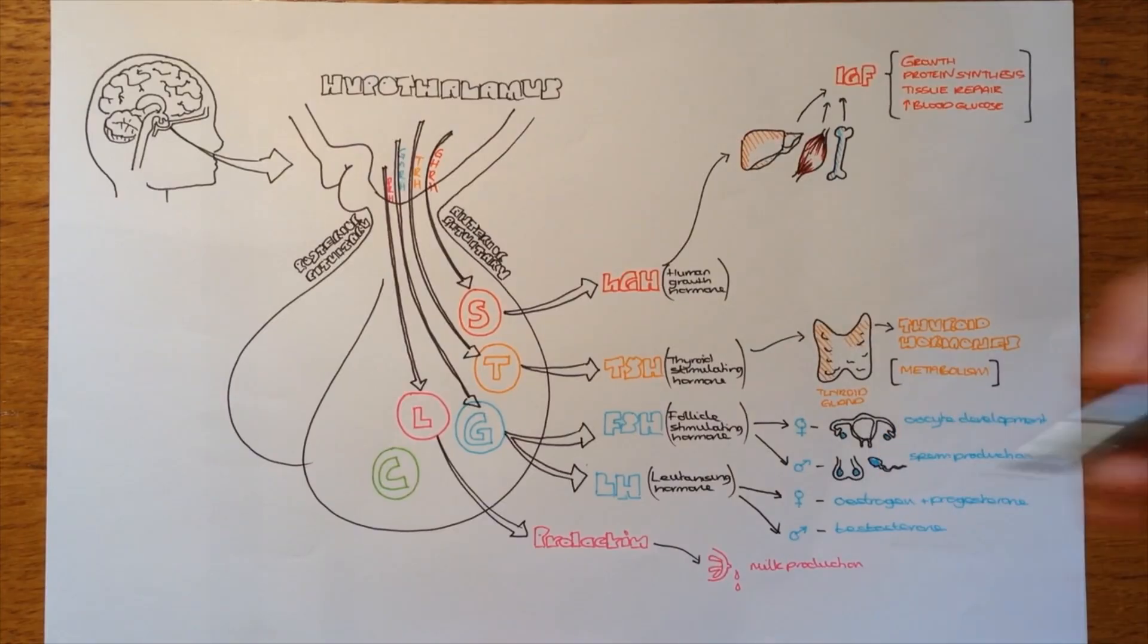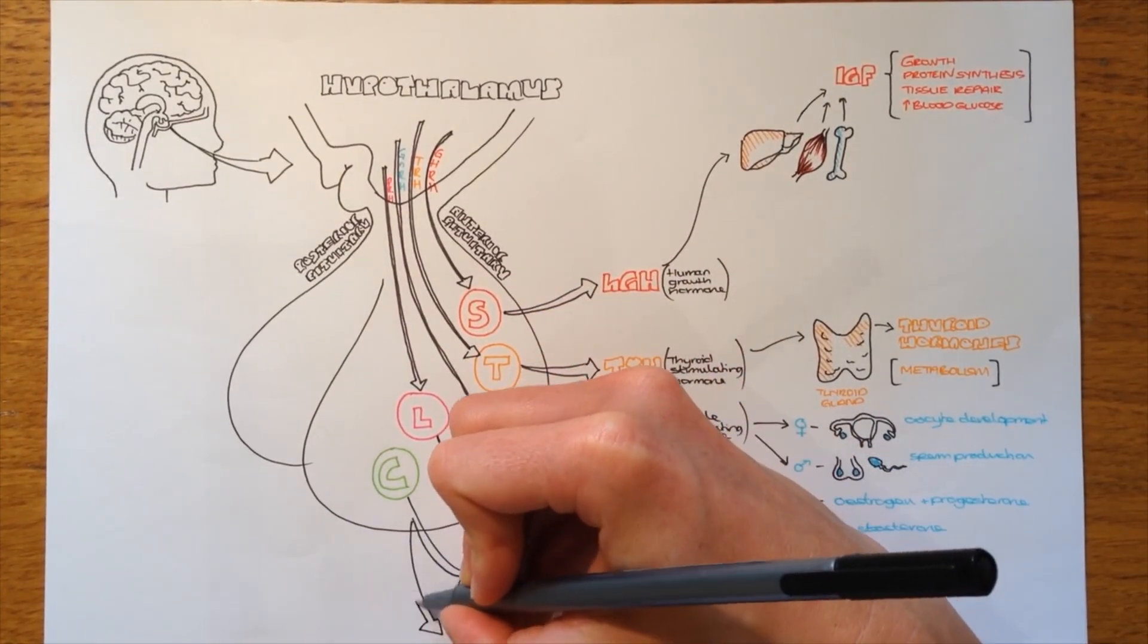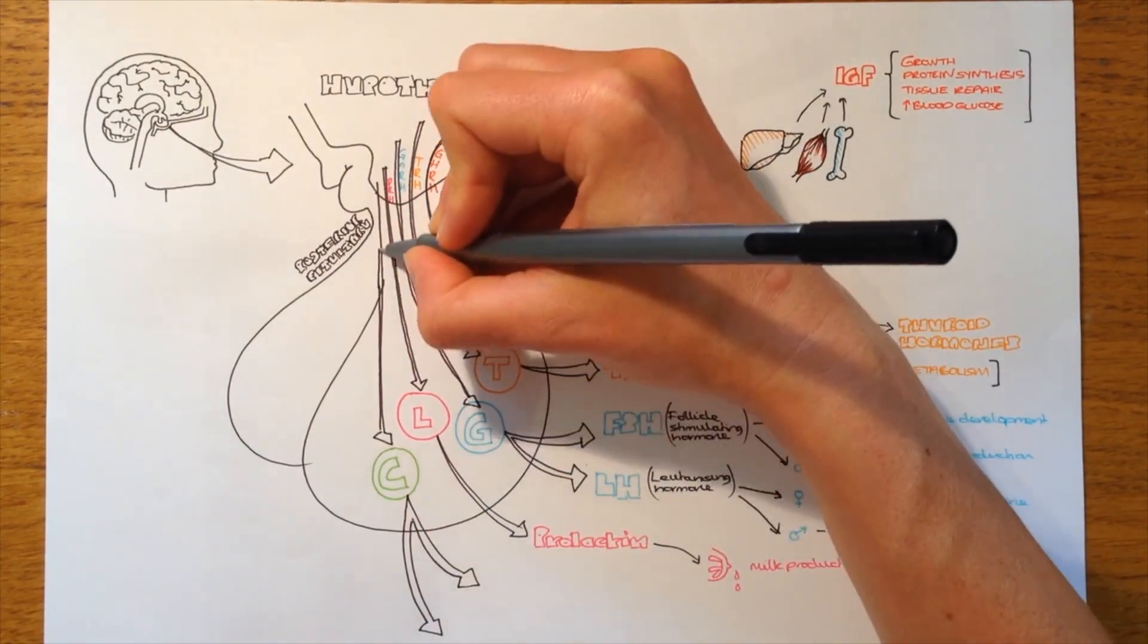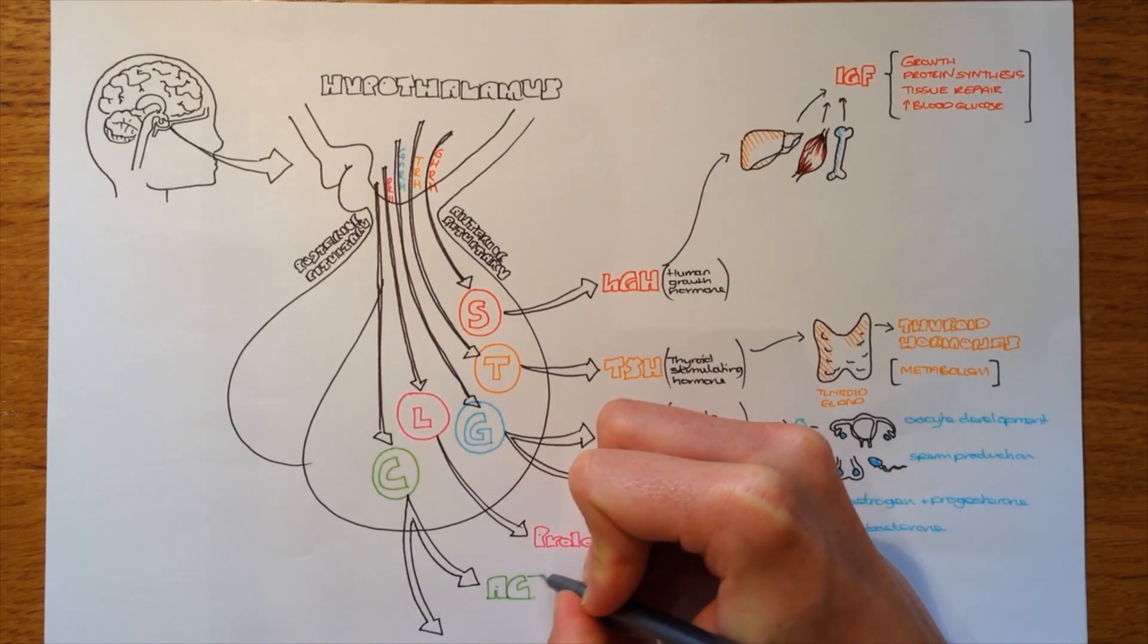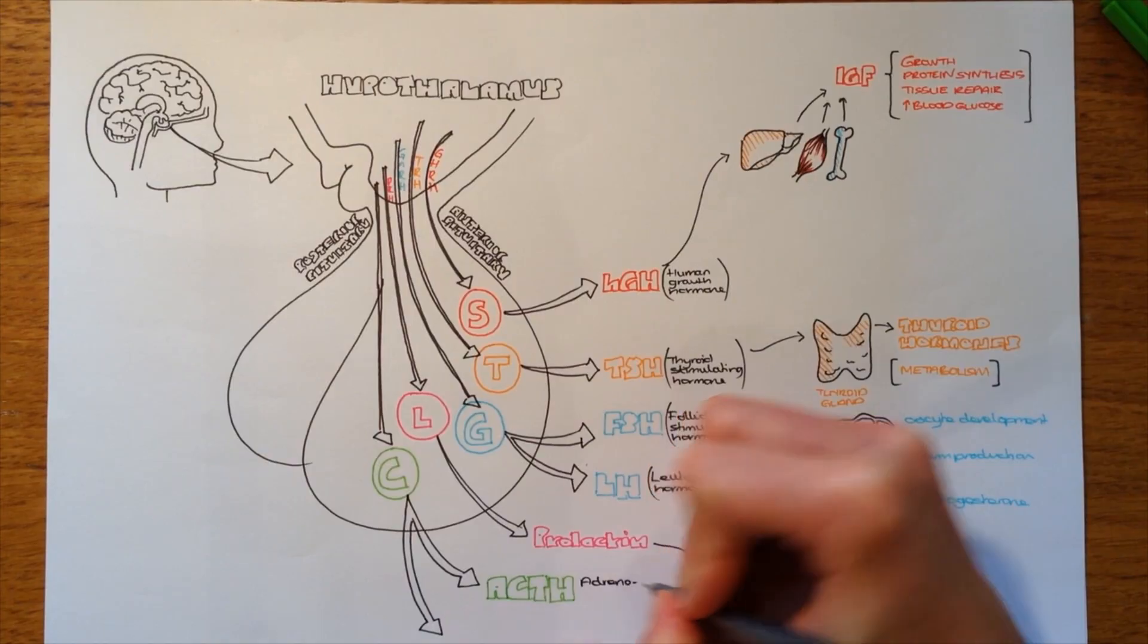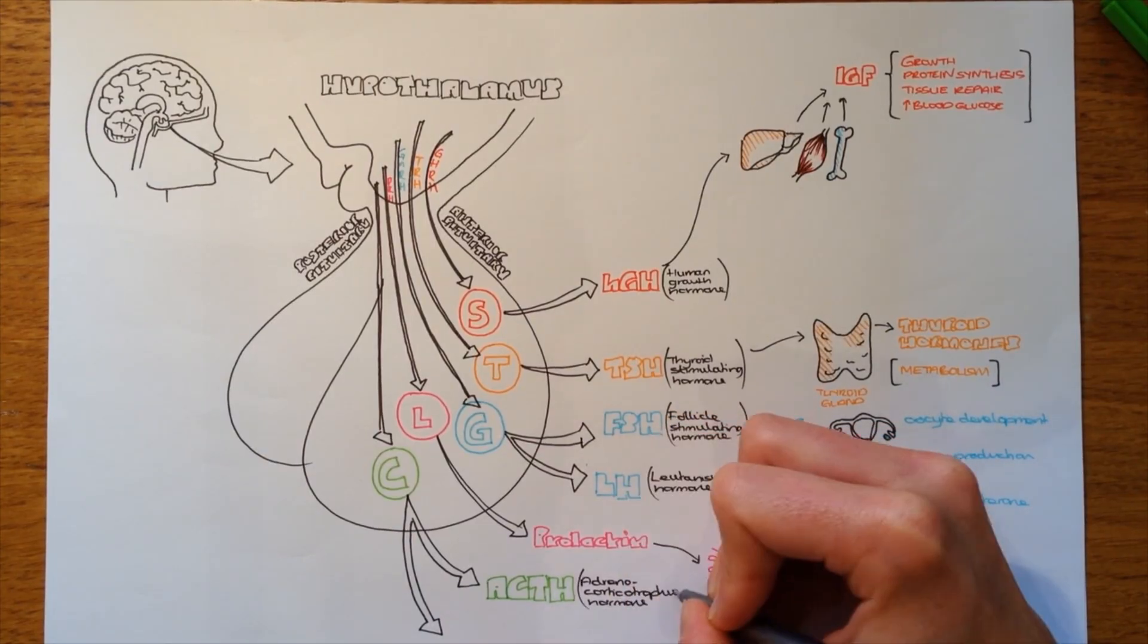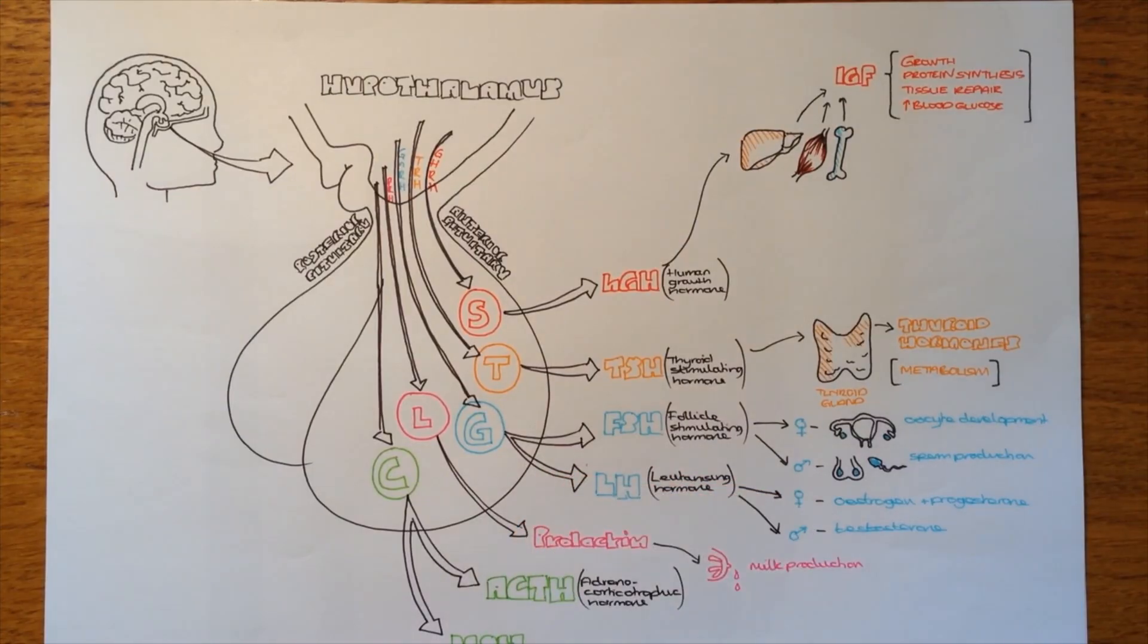And the next one, the final type of cell, is the corticotrophs. And these are stimulated by corticotrophic releasing hormone, or CRH, to produce ACTH, or adrenocorticotrophic hormone, and MSH, melanocyte-stimulating hormone.